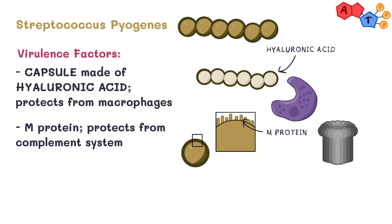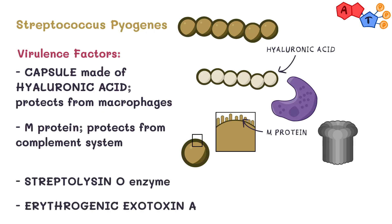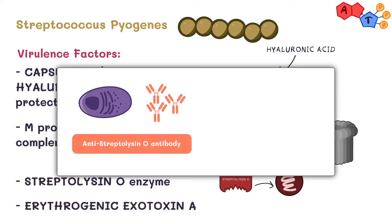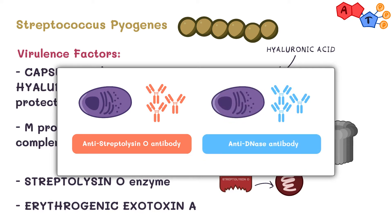Now let's talk about the toxins of Streptococcus pyogenes. It has enzymes and toxins that contribute to its virulence, most importantly Streptolysin O enzyme and erythrogenic exotoxin A. Streptolysin O, from the lysin in its name, functions to lyse the cell membrane — therefore its presence makes Streptococcus pyogenes a beta-hemolytic strep. Our bodies also generate antibodies against Streptolysin O and DNase enzyme of Streptococcus pyogenes, and these anti-streptolysin and anti-DNase antibodies can be measured, which aids in diagnosis.